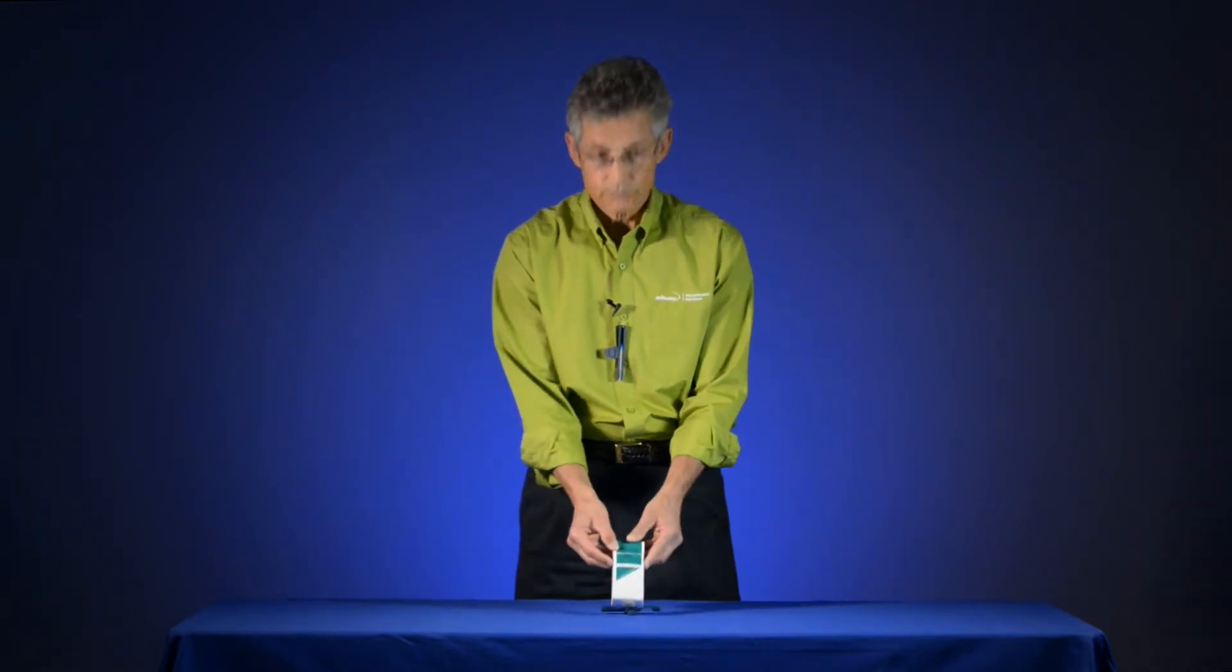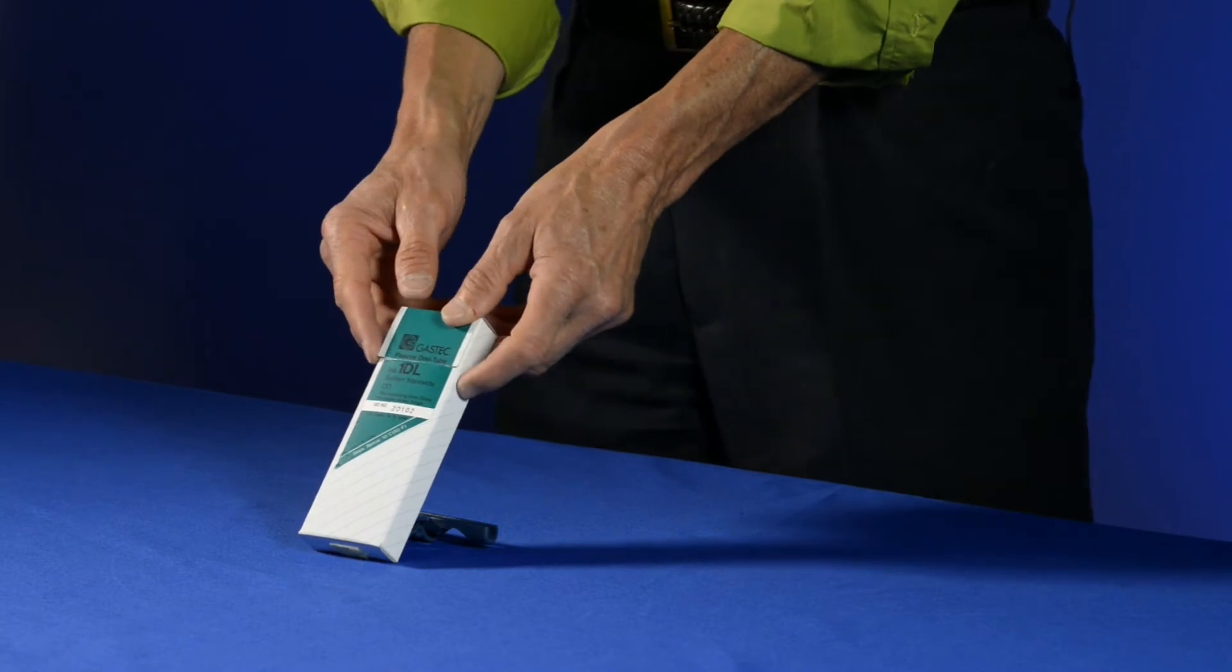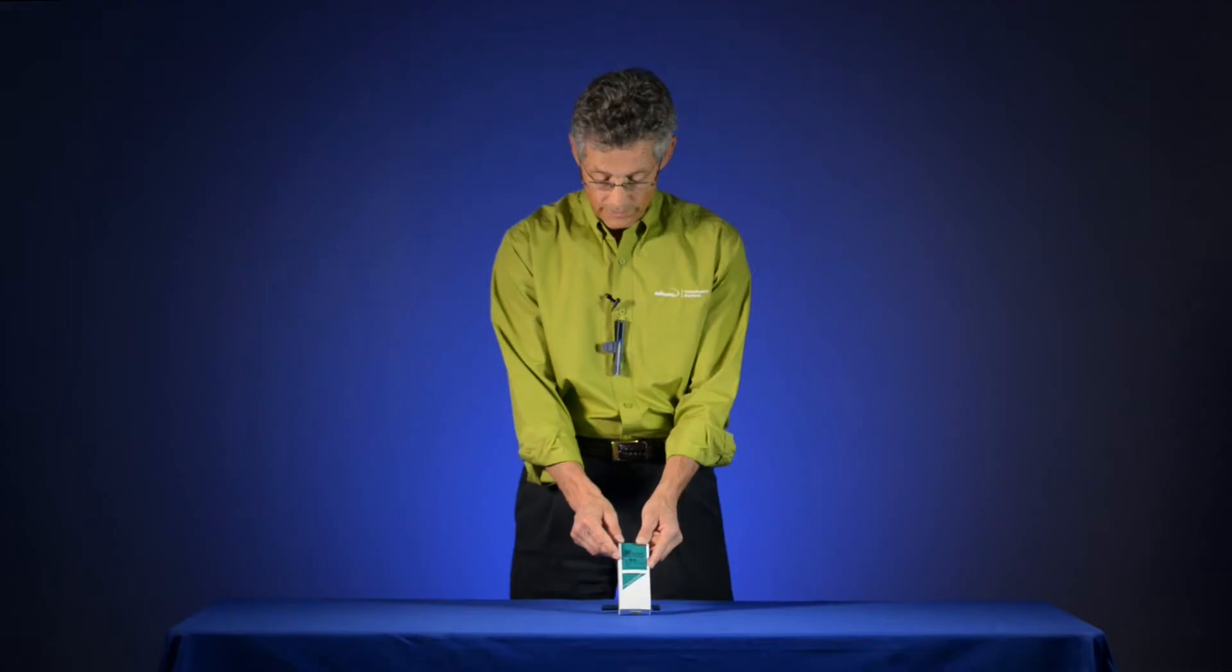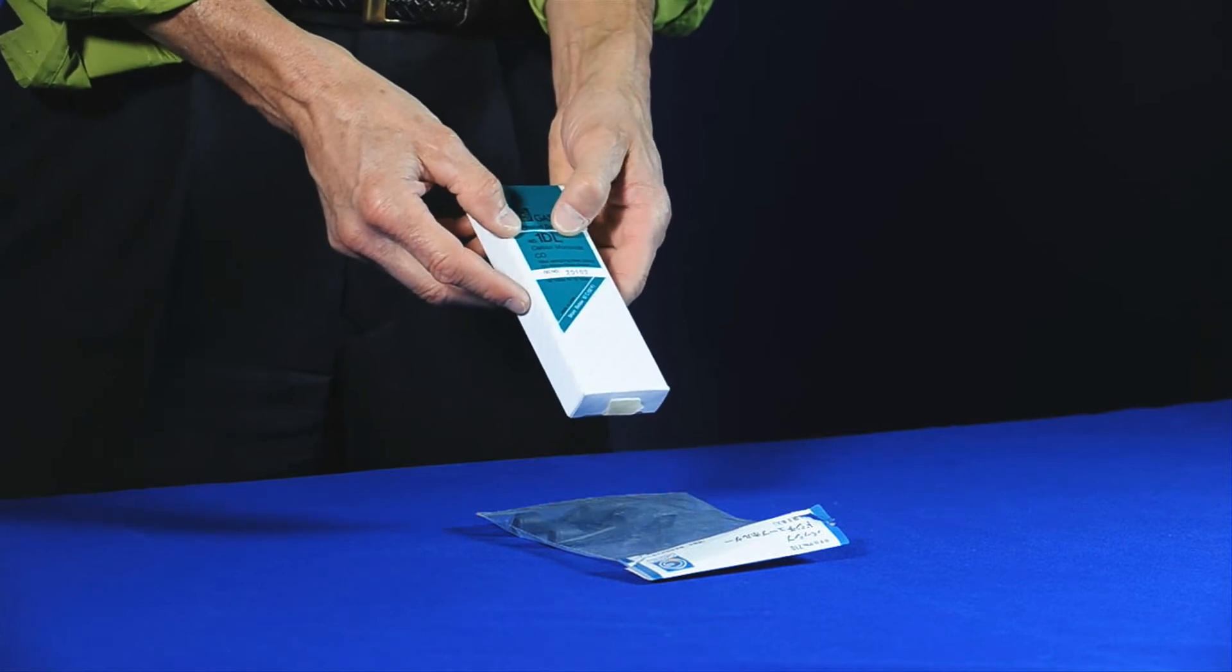So there are lots of DOSI tubes available for ammonia, chlorine, NO2, SO2. In fact, there's 24 different tubes. One we're going to use today is the carbon monoxide or the 1DL tube.